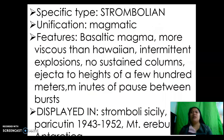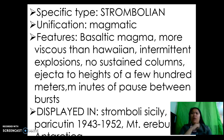Next is Strombolian, also under magmatic — more on magma. Basaltic magma, very fluid, 50% silica, with the rest being gases, magnesium, iron, and silicates. It is more viscous than Hawaiian, so as you can see the viscosity increases. It features intermediate explosions with no sustained columns, ejected to heights of a few hundred meters, with minutes of pause between bursts.